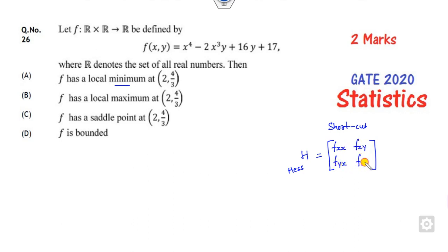Fyx, and Fyy. Then you have to find the two determinants. The first one is Fxx, the first element, and the second one is itself here. When it is said to be the maximum, the first determinant will be less than 0, second determinant will be greater than 0. That is the maximum.